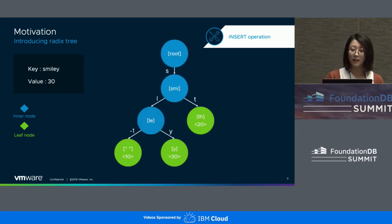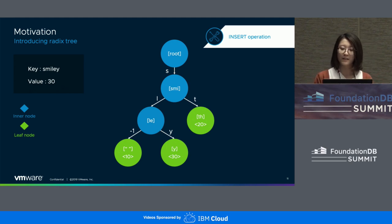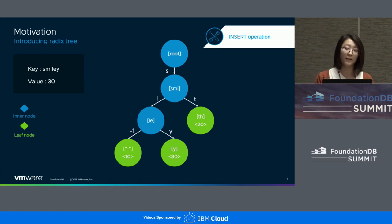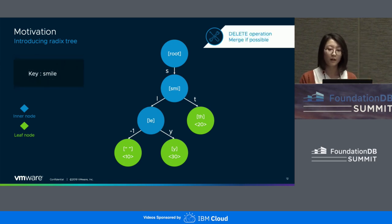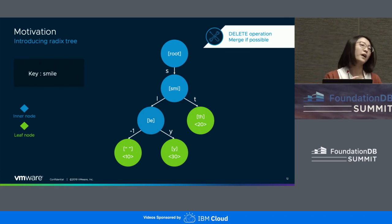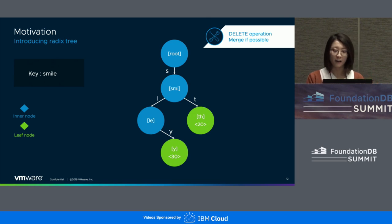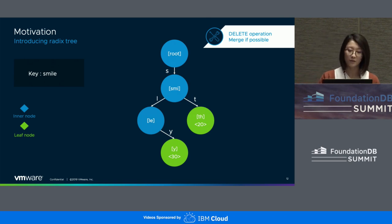There are many corner cases and details involved. Let's keep inserting the key 'Smiley' with value 30. You split and end up having a leaf node with an empty key. The challenge is how to deal with this edge case. For my implementation, I use a special number minus one to represent the empty key. Delete is relatively simple compared to insert: you find the leaf node and delete it, but the tricky part is to merge if possible. In this case, the parent node has only one child left, so you can collapse two nodes into one to save space.